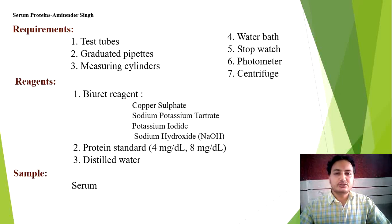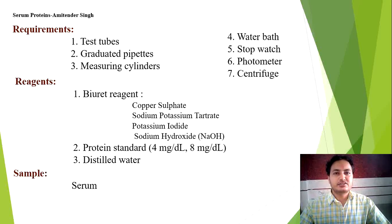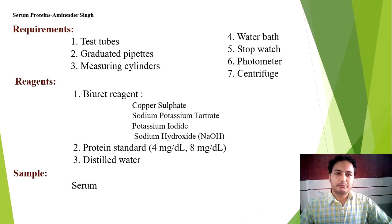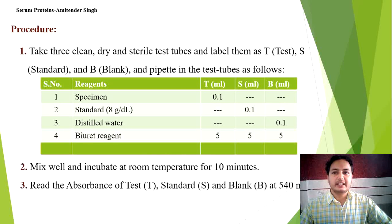Protein standards are used — 4 mg per deciliter, 8 mg per deciliter — and their concentrations vary depending on the kit. The procedure volumes may also vary depending on the concentration of the reagents, so these differ kit to kit. Distilled water is used as blank, and the sample used is serum, since we are performing serum total protein estimation.